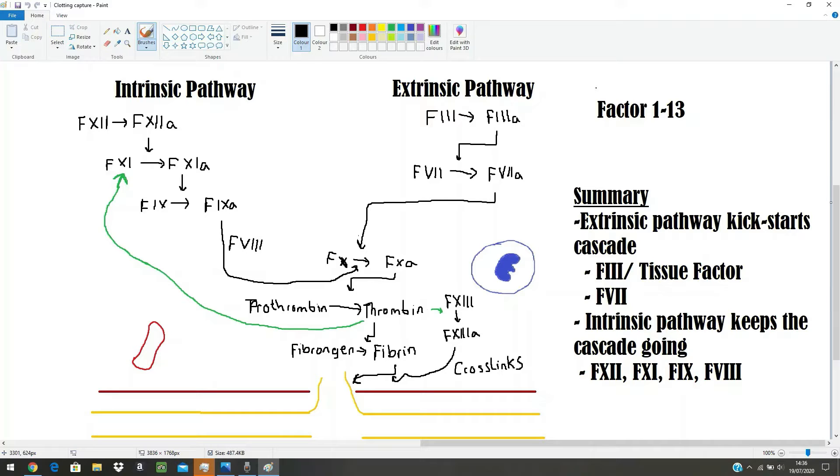9 ends in an e. Therefore the next factor is going to start with the letter e. And the next factor that combines with 9 is 8, okay? And then lastly, 8 ends in a t. And the next factor begins with a t, well, the next factor is factor 10. So therefore, just knowing what factor came before, we can work out what factor is going to come next in the intrinsic pathway, just by knowing the last letter of that factor.